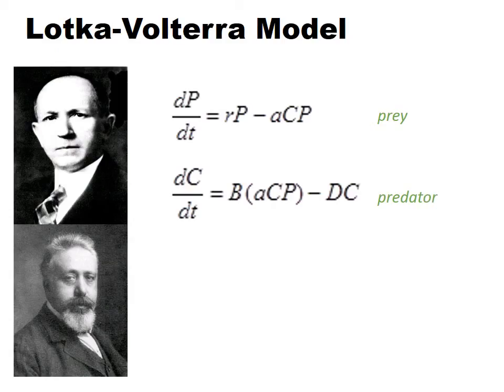Mathematicians Alfred J. Lotka and Vito Volterra independently came up with two simple differential equations to describe changes in prey population size with regard to changing predator population size and vice versa. This is known as the Lotka-Volterra model. As we explore the ecological basis of predator-prey relationships, consider the limitations of this model and what assumptions might have been made.